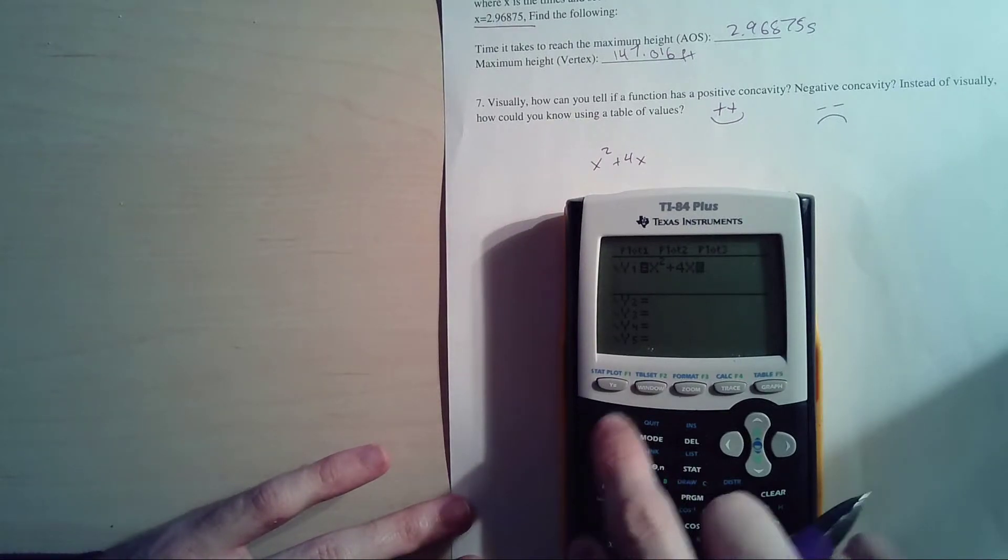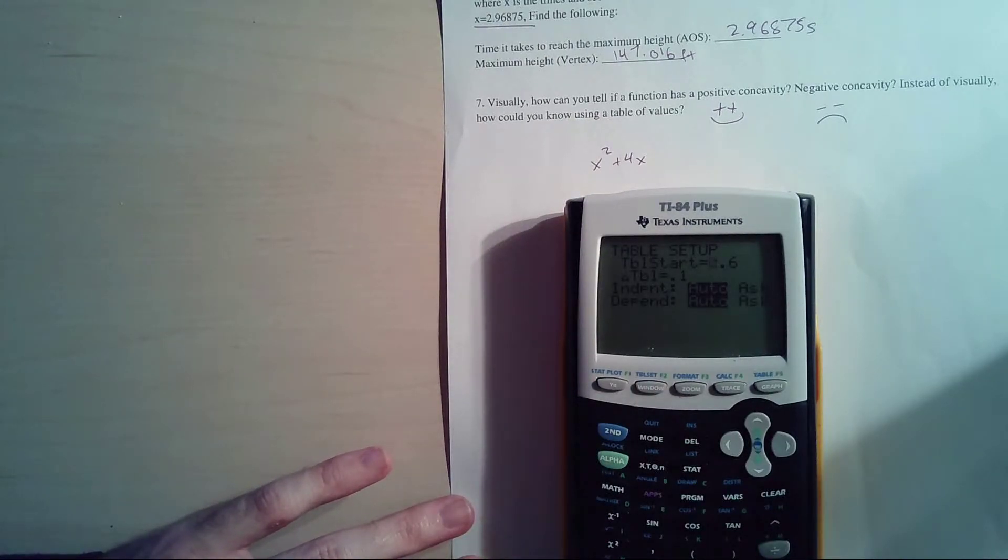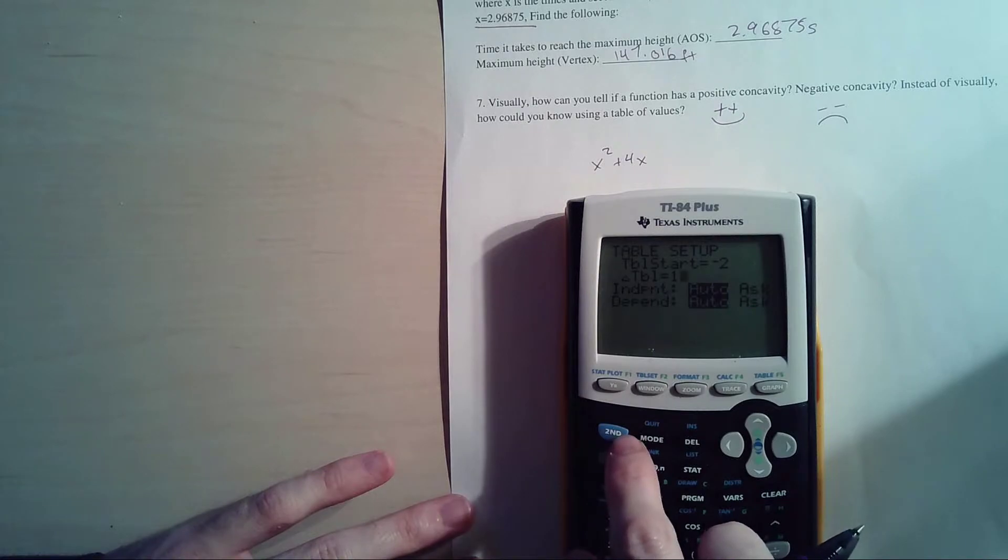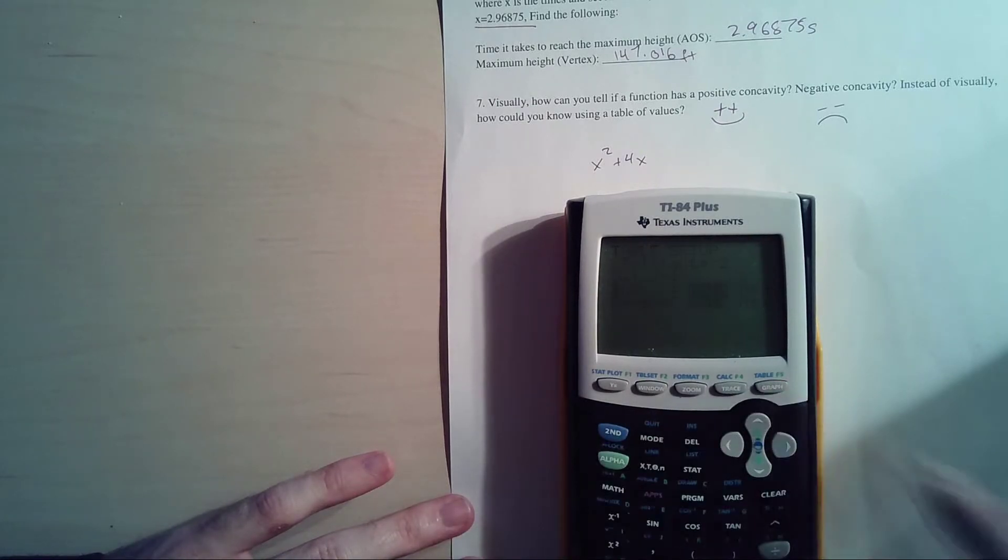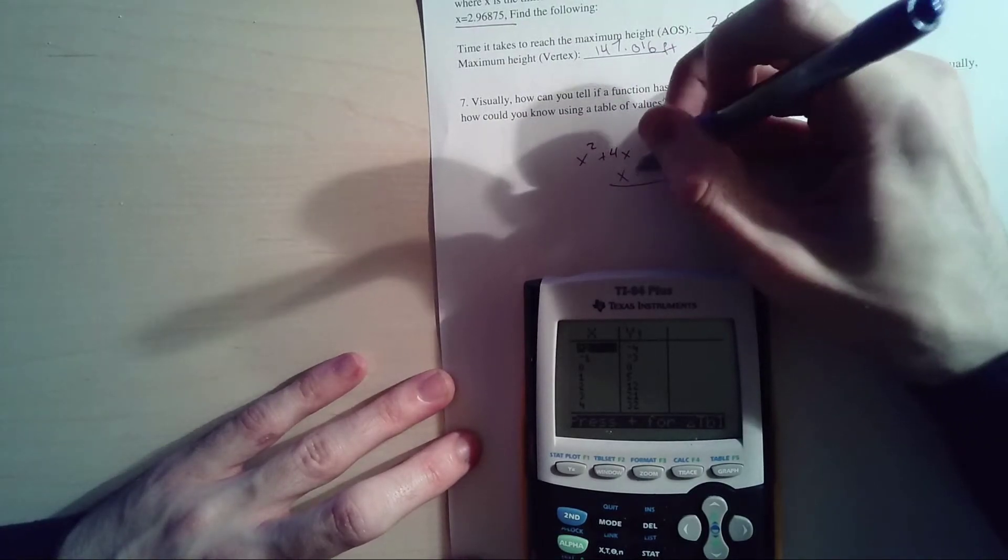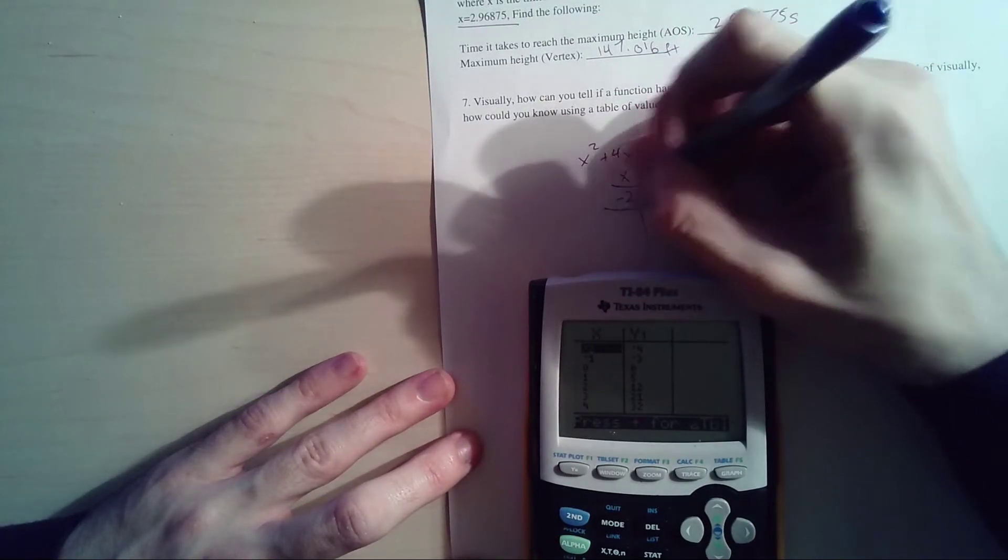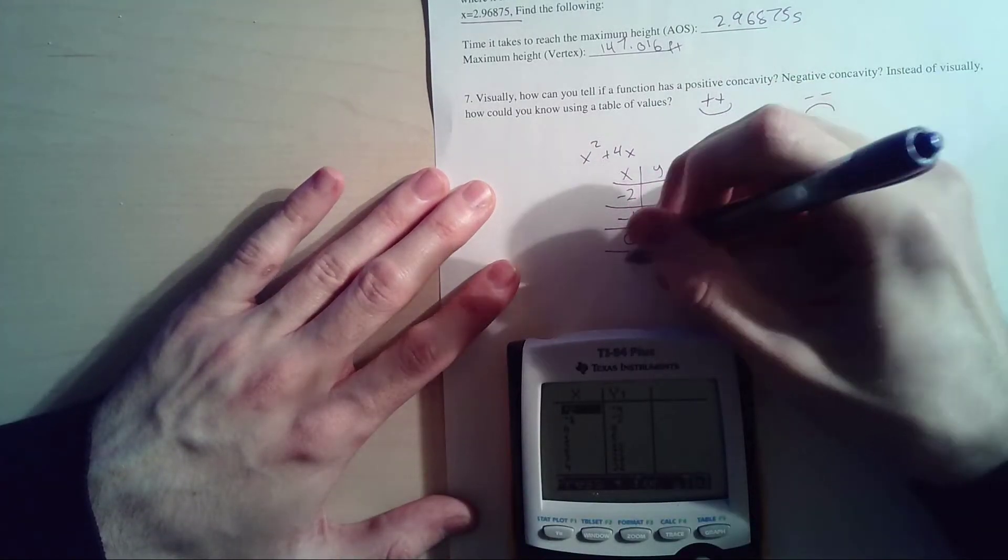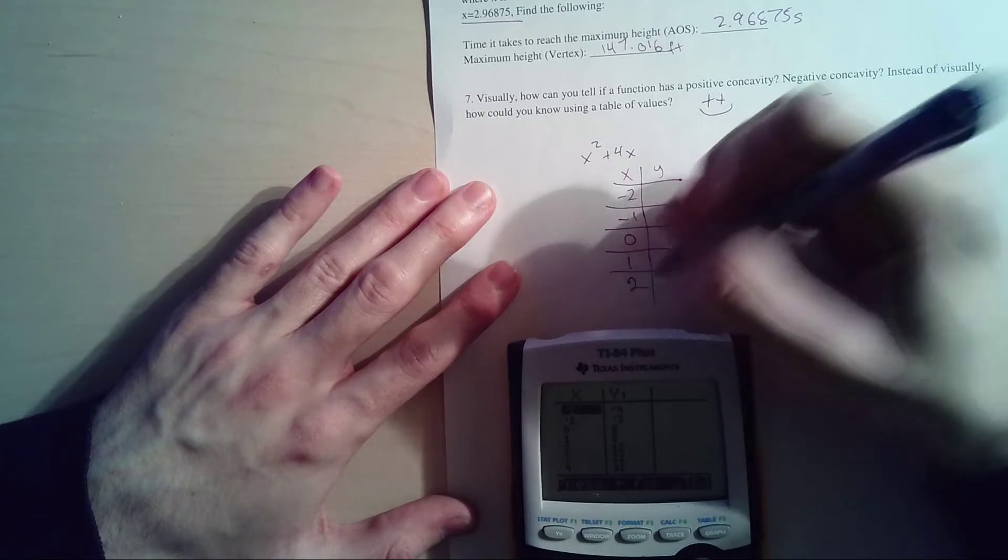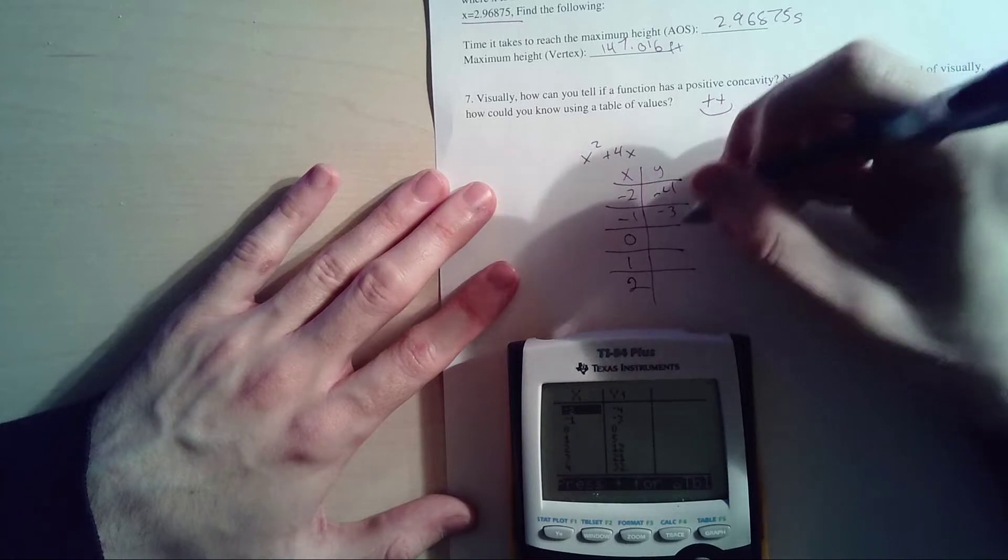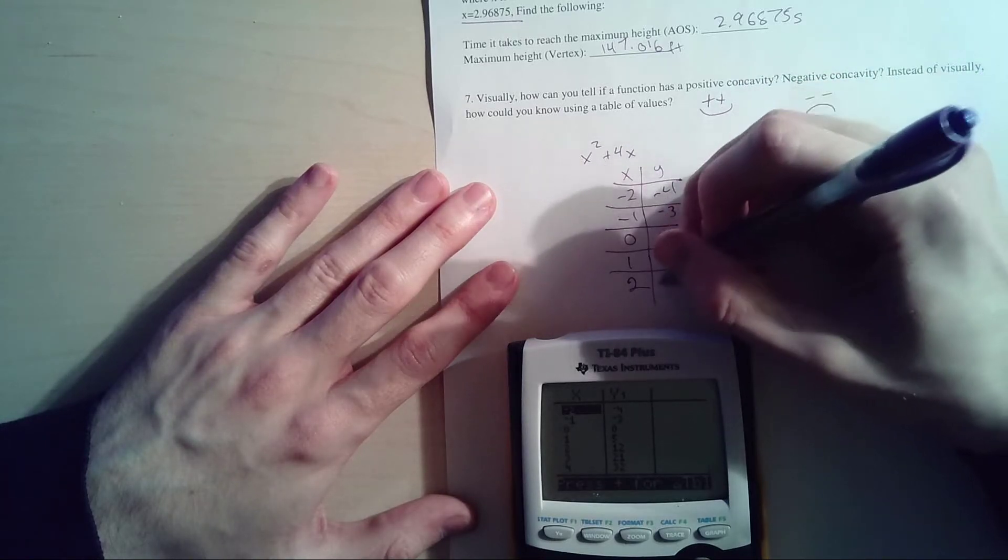We want to make a table. Our table was messed up from an earlier question, so we got to reset this. Where do we want our table to start? I like doing negative 2. I like my table change to be 1 if I don't know what's happening. So I set those up. Second Table, get my table up. So my x values here, y values here: negative 2, negative 1, 0, 1, and 2. And using my calculator, I'm just literally copying these numbers down: negative 4, negative 3, 0, 5, and 12.